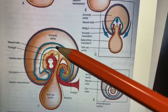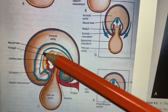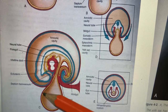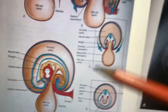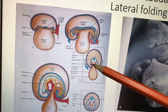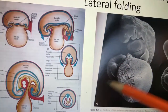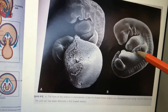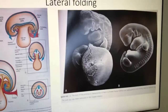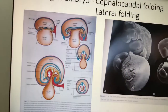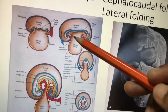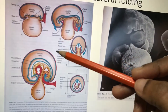This shows the amniotic cavity, neural tube, endoderm, and mesoderm — and how the folding occurs with lateral folding. You can see the yolk sac entering inside. That's all about the folding: lateral folding is the interesting thing happening at the fourth week.